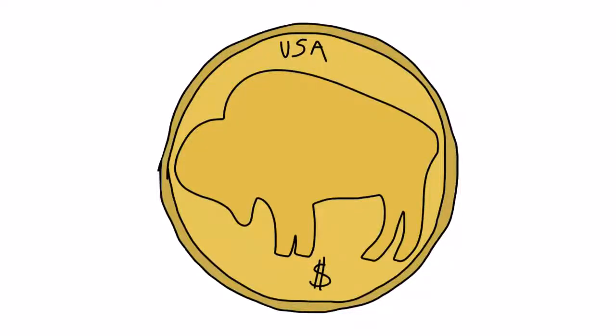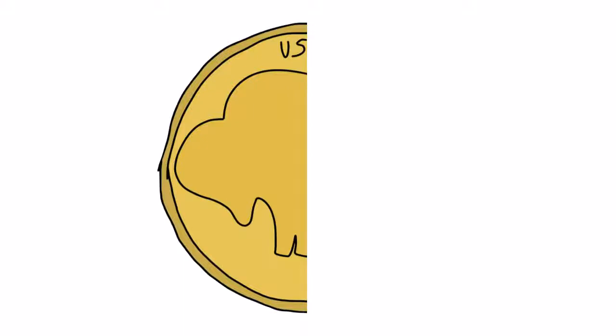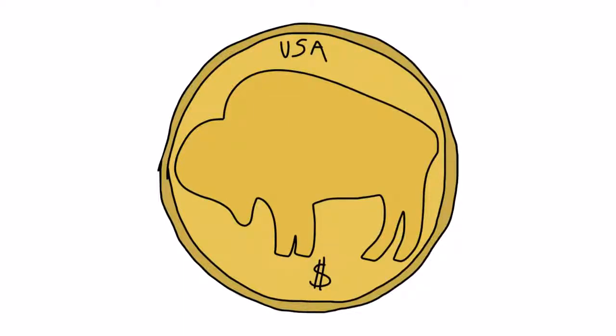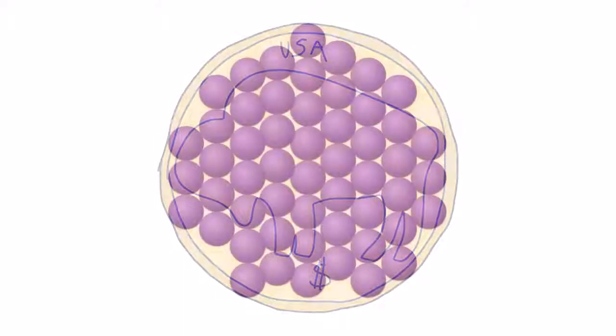If an object is cut in half, its density remains the same. Take a look at a gold coin, made of neatly arranged gold atoms.